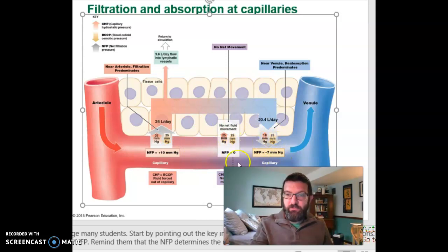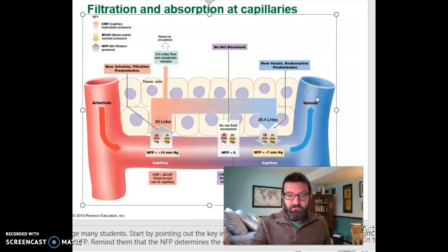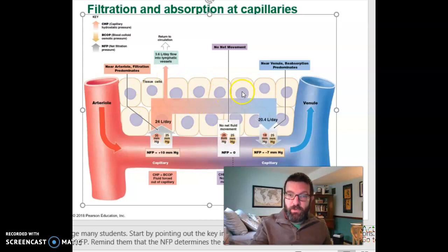So we have blood returning in your veins, and all along, diffusion is still occurring — more oxygen and nutrients in your capillaries flow out to tissues with little, and a lot of waste in your tissues flows into blood with little waste.